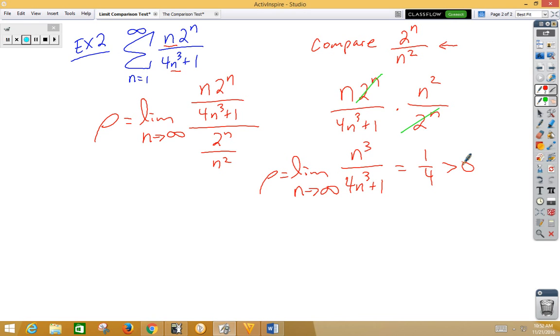So now let's go back to what we're comparing to. If we think about 2 to the n over n squared, as we go to infinity, that thing's going to diverge. It's going to get larger and larger and larger. So therefore, they both diverge.